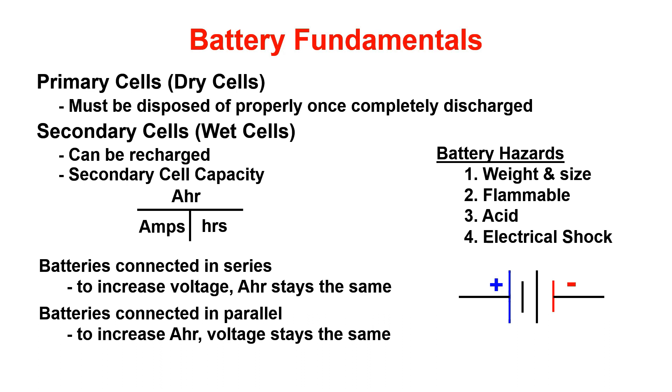Notice the t-chart below. You can utilize this to calculate values. When we connect batteries in series, voltage is increased and amp hours stay the same. However, when we connect batteries in parallel, amp hours increases and voltage stays the same.